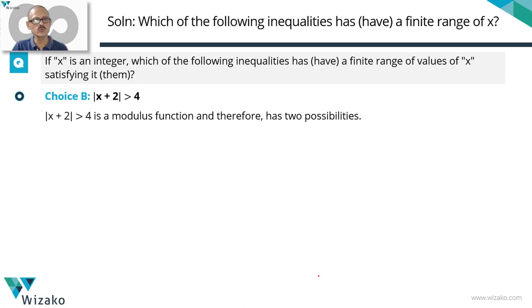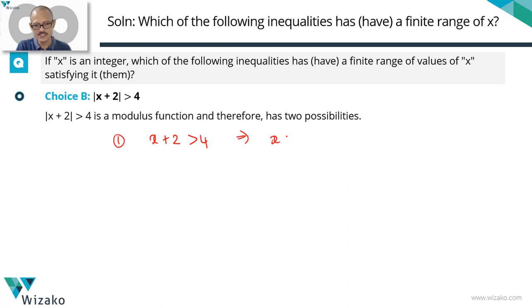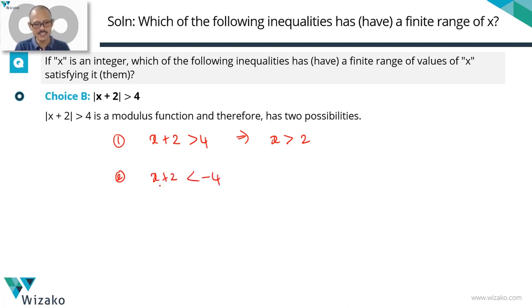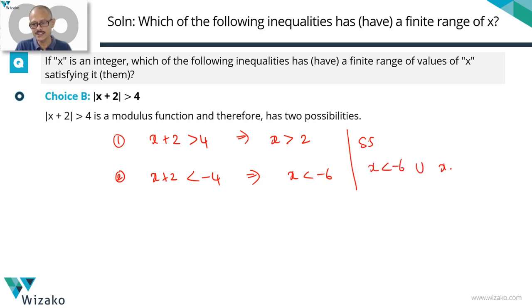Moving to option B, an absolute value inequality. There are two possibilities for the expression inside the modulus. If positive: x + 2 > 4, giving x > 2 — already going to infinity. If negative: x + 2 < −4, giving x < −6. So the solution set is x < −6 union x > 2.